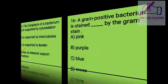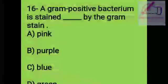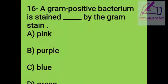Question 16: A gram-negative bacterium is stained by the Gram stain: A. Pink, B. Purple, C. Blue, D. Green. The right answer is B, purple.